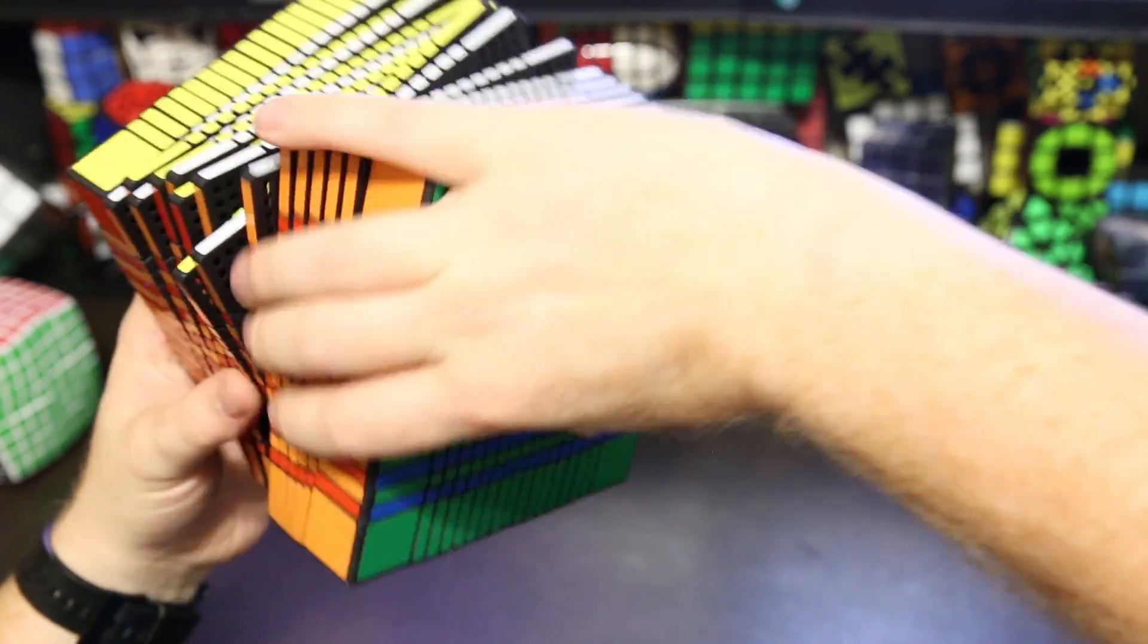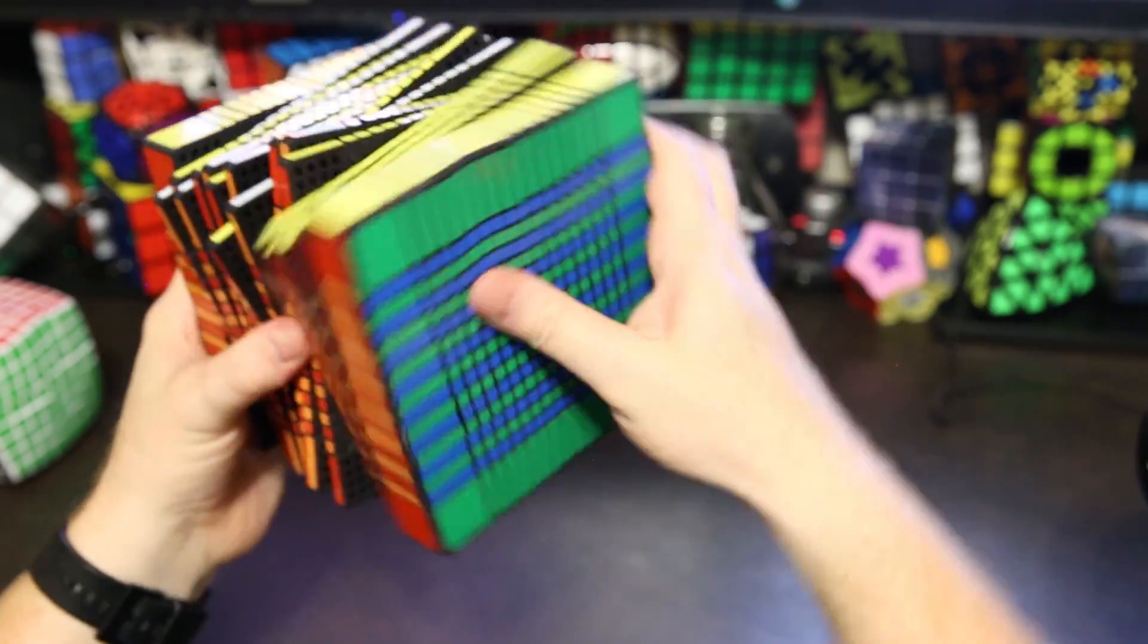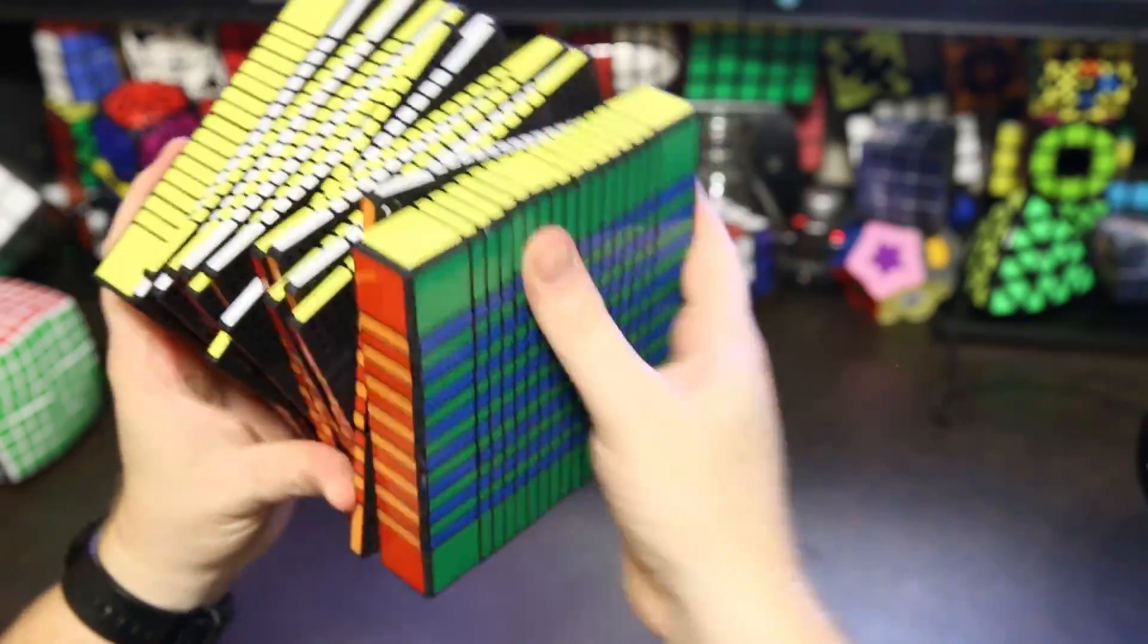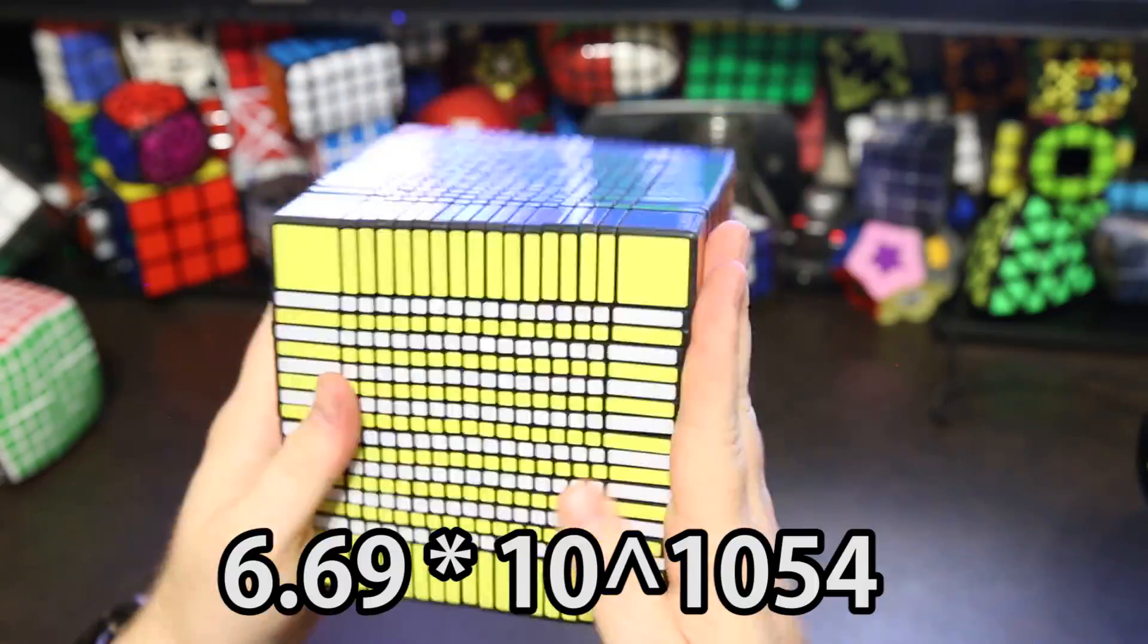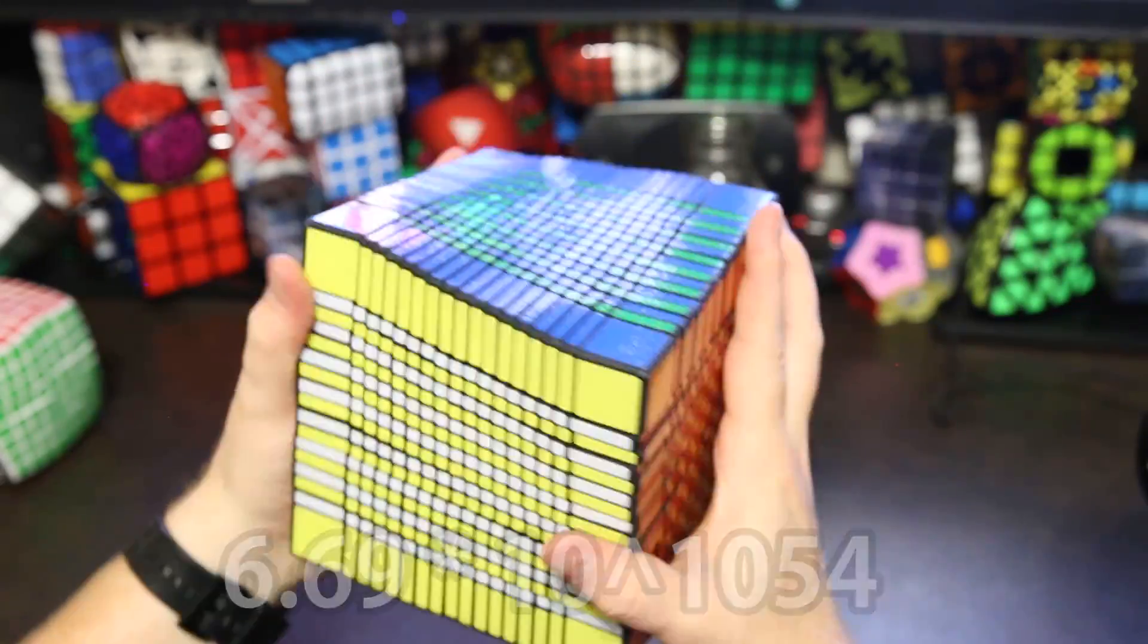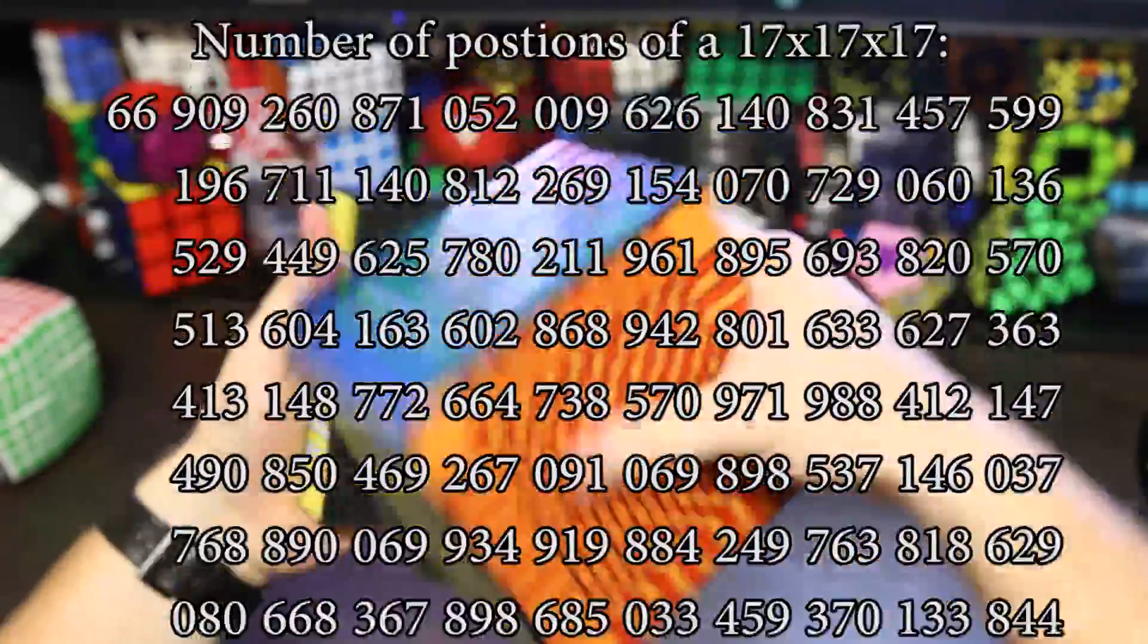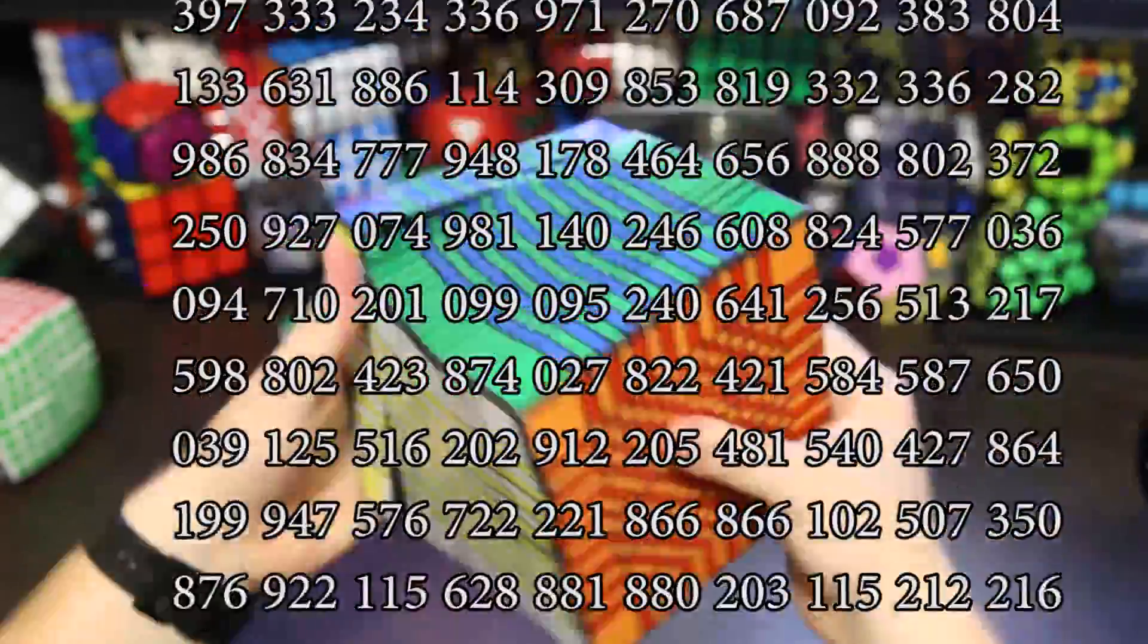So that's a big number, right? But that number doesn't really give you a good idea of the size of the number. So let me just tell you in scientific notation. In scientific notation, the number is 6.6 times 10 to the 1054. That is a huge number. It's so big. It is unimaginably big. I can't come up with a way to consider how big this number is. And I've been trying really hard.